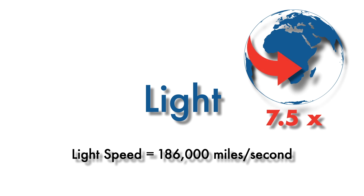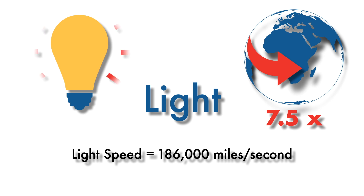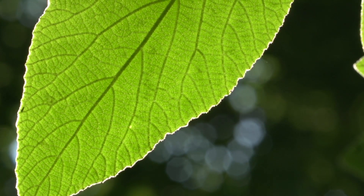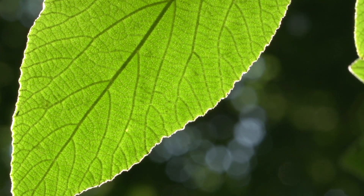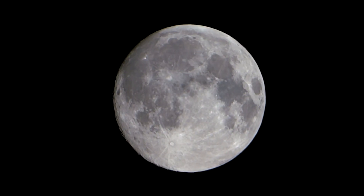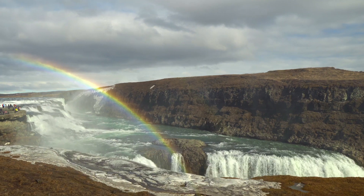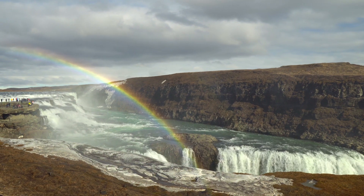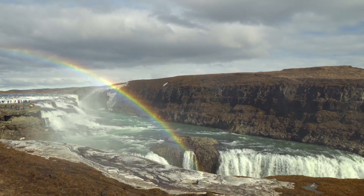Light radiates in every direction from its source. Picture a light bulb — the light from a light bulb does not travel in one direction only; rather, it radiates outward in every direction. The same goes for the sun, or any other object that produces light. Light has wave-like properties as well, in that it can be absorbed, reflected, or refracted as it passes through different types of matter. Plants, for example, absorb sunlight during the chemical process of photosynthesis. The moon reflects the sun's bright light, making it visible to us at night. And water in rain can refract sunlight, splitting it into all the colors seen in a rainbow.